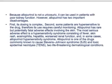Because allopurinol is not a uricosuric, it can be used in patients with poor kidney function — this is a very important point for Step 1. However, allopurinol has two important disadvantages: first, its dosing is complex; second, some patients are hypersensitive to the drug. Therefore its use requires careful monitoring.